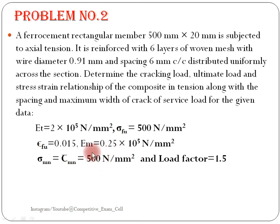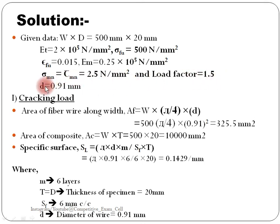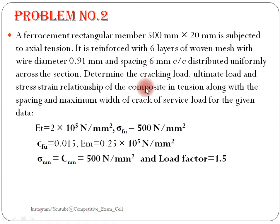The given data: sigma mn (or tau mn) is equal to 2.5 N/mm², load factor is equal to 1.5, section W by D is 500 mm by 20 mm, Et and sigma fu and Em are given, and diameter of wire is 0.91 mm with spacing 6 mm center to center distributed uniformly.